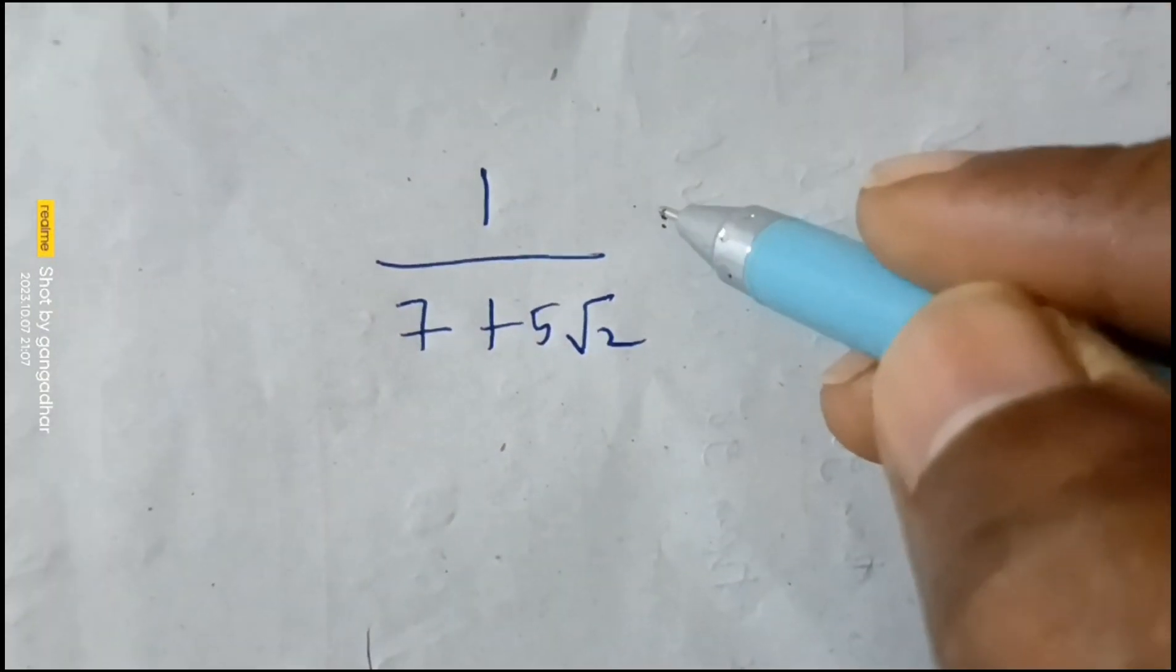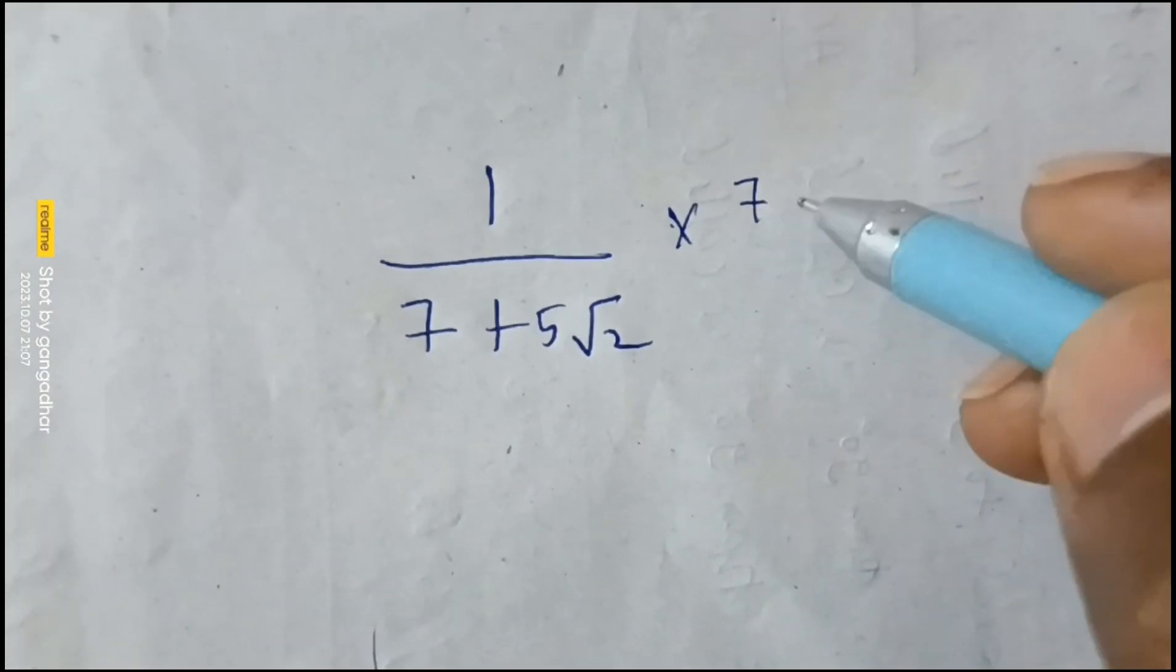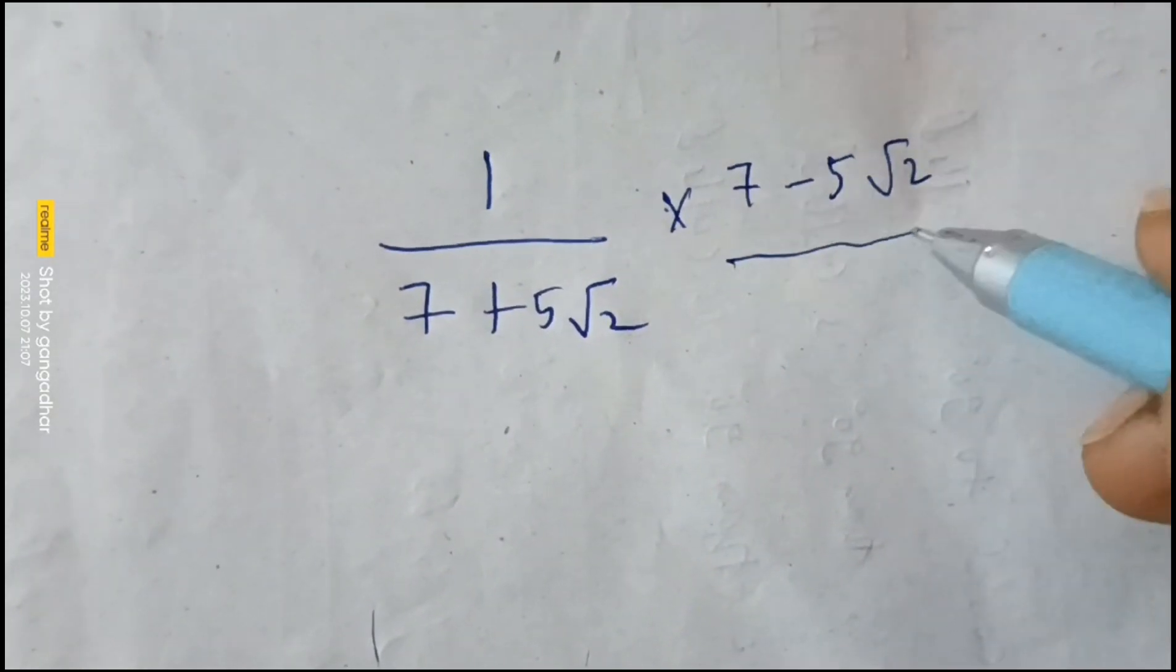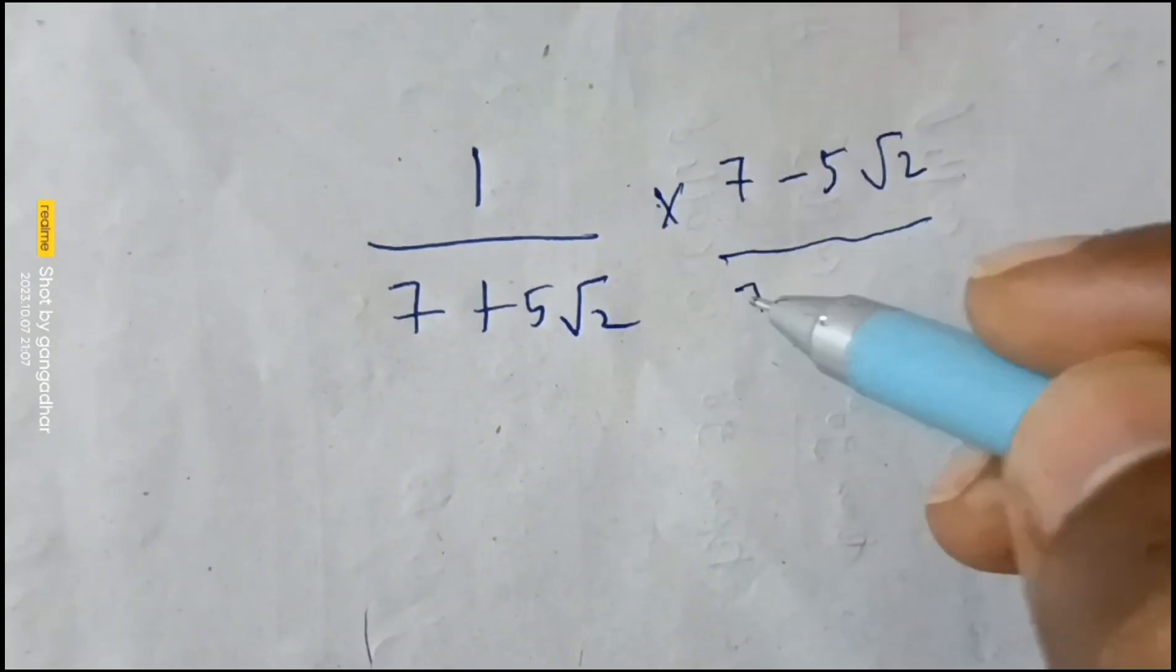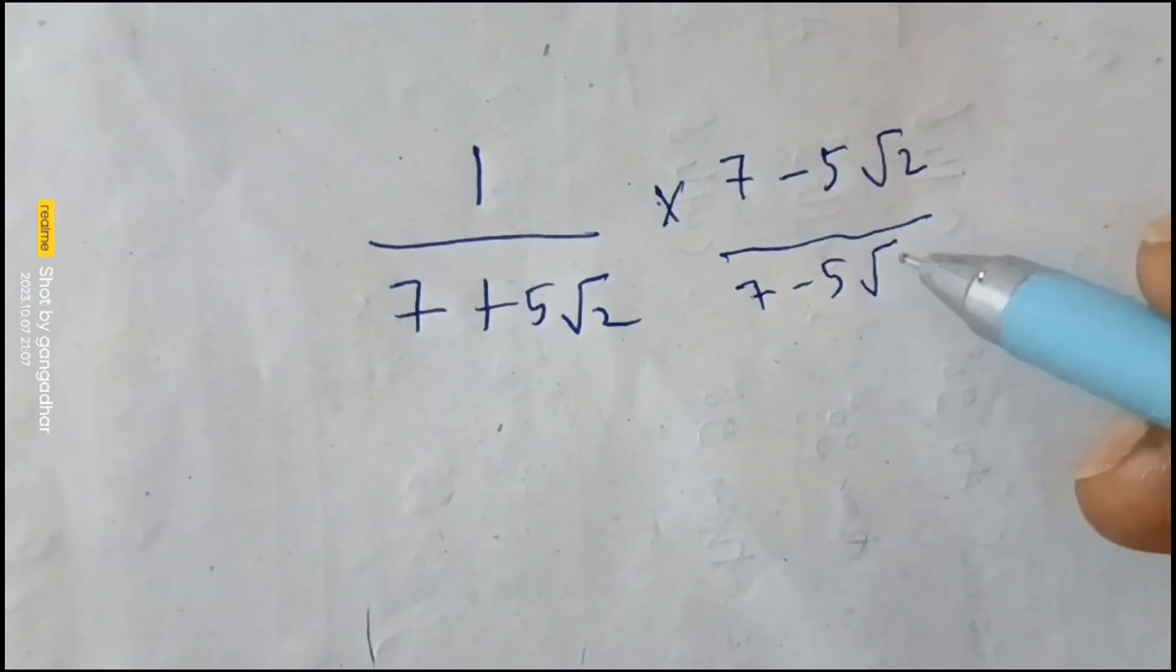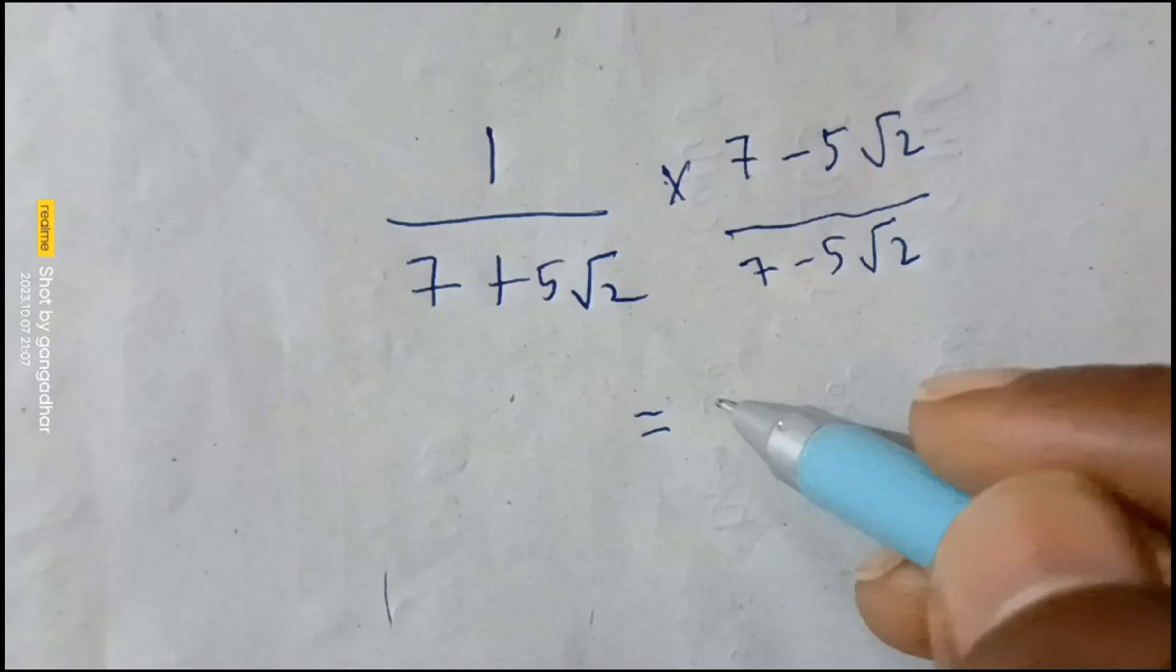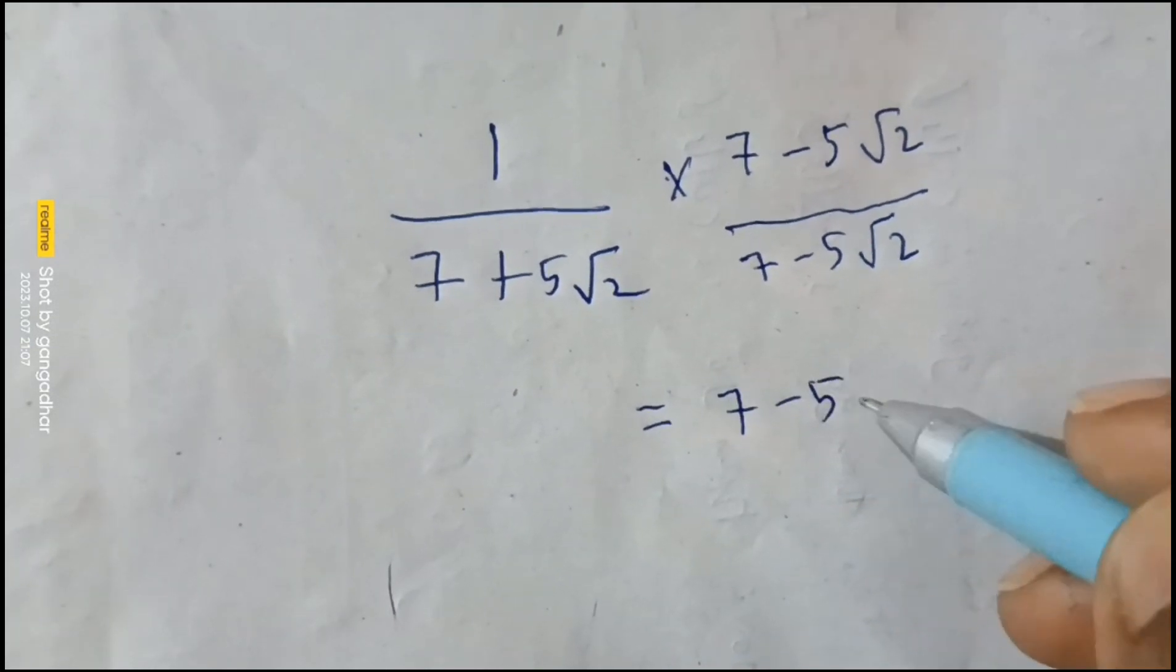Rationalize this: one over seven minus pi root two, divided by seven minus pi root two. When rationalizing, the sign changes—plus becomes minus, minus becomes plus—seven times seven minus pi root two.